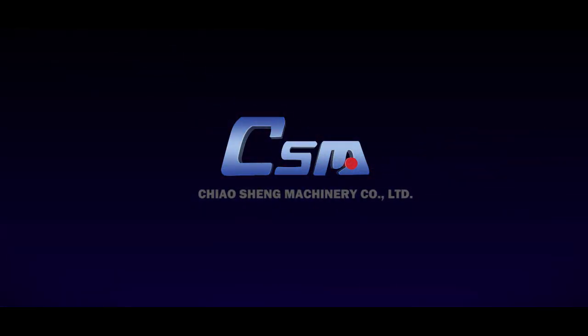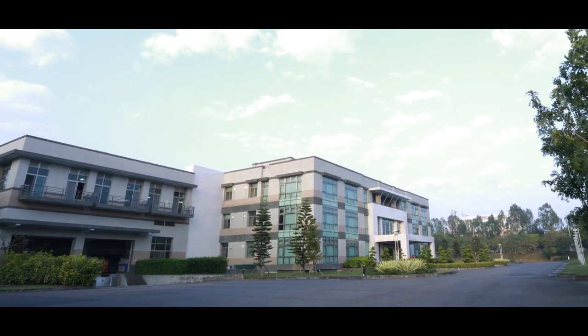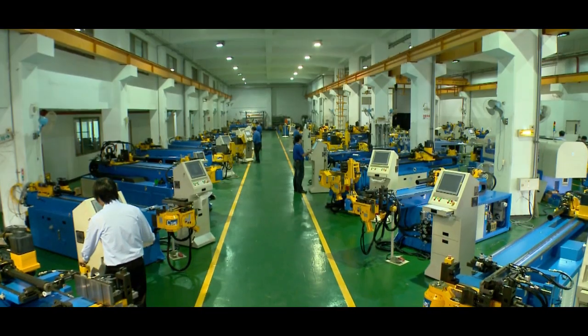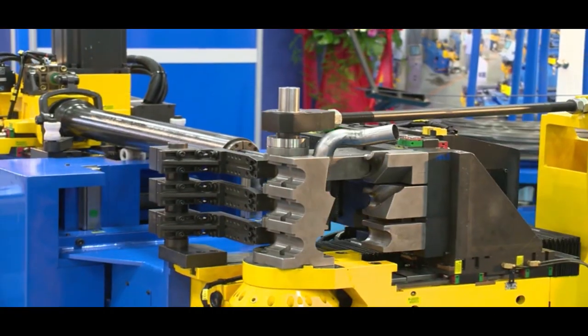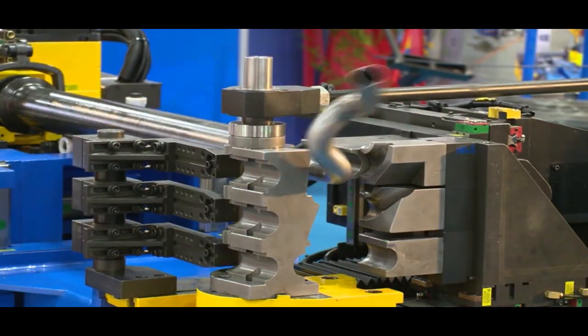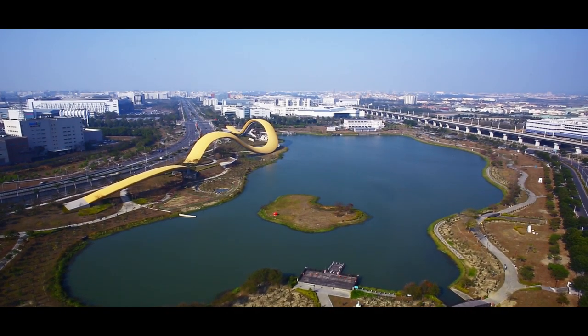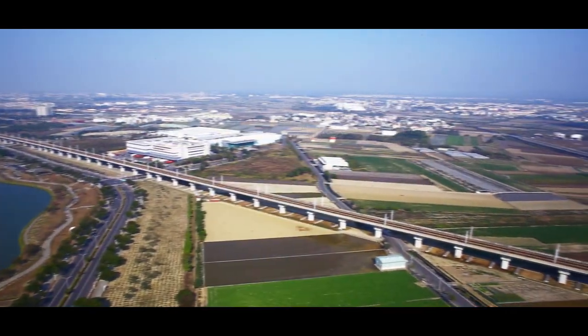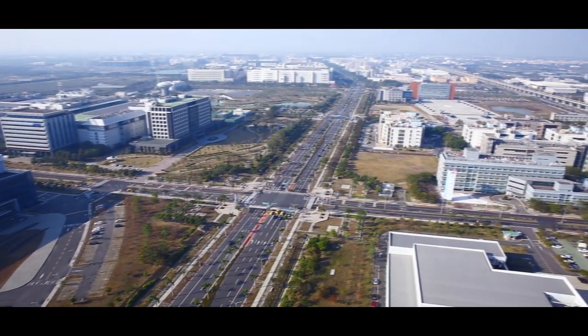Chaosheng Machinery Company Limited, founded in Tainan Taiwan in 1982, is a tube bending machinery manufacturer now recognized worldwide for our professionalism and persistence. In order to accommodate the growth of our business, CSM relocated to the Southern Taiwan Science Park in 2005 and opened a second production facility in 2012.